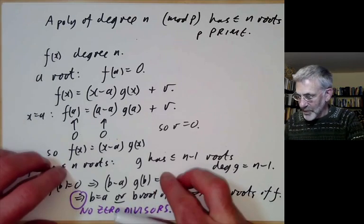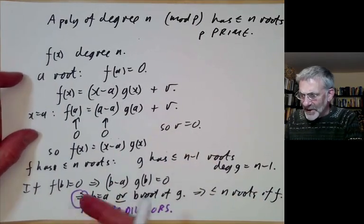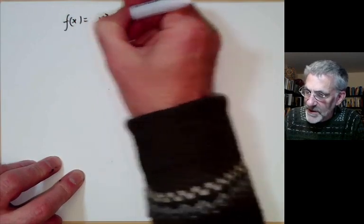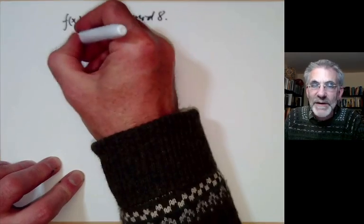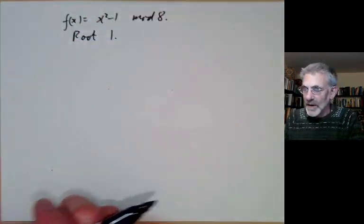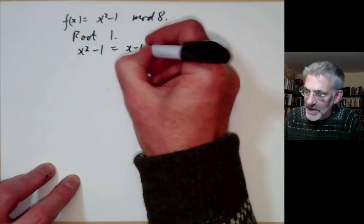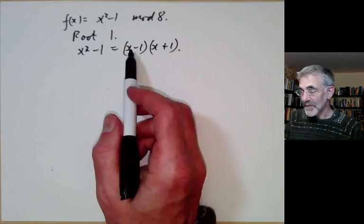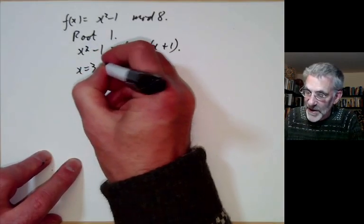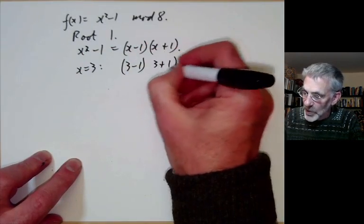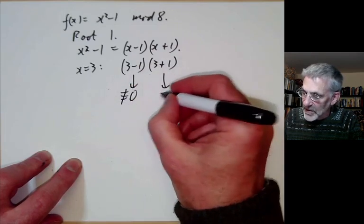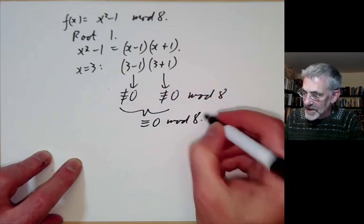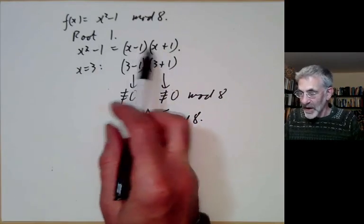So polynomials of degree n modulo p have at most n roots. Let's see this step failing if we're not working modulo a prime. Take f(x) = x²−1 mod 8. There's a root at x = 1, so x²−1 = (x−1)(x+1). But if x = 3, we get (3−1)(3+1) = 2×4, and neither factor is zero mod 8, yet their product is. So we found a new root that isn't a root of either factor.